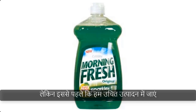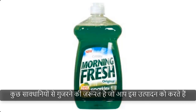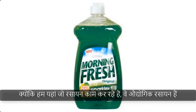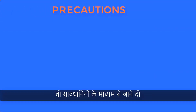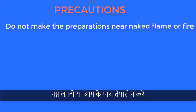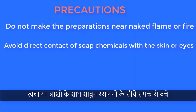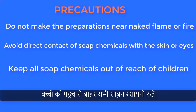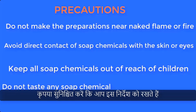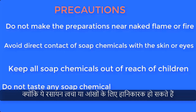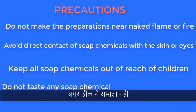Before we go into the production proper, let's go through some precautions. The chemicals we're dealing with here are industrial chemicals. Do not make the preparation near naked flames or fire. Avoid direct contact of soap chemicals with the skin or eyes. Keep all soap chemicals out of reach of children and do not taste any soap chemicals. These chemicals can be hazardous to the skin or eyes if not properly handled.